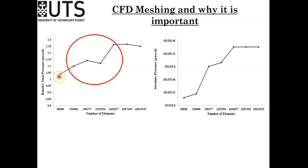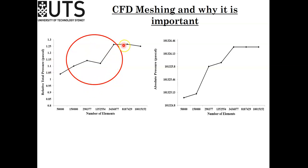I calculated the pressure at the outlet of my domain. When it is 50,000 elements, the pressure is close to 1.05. As I increase the mesh, the pressure at the outlet increases, then decreases slightly, then increases again. Up to this point it's quite stable. The solution was changing due to the mesh up to this point, but from here it's not changing that much.